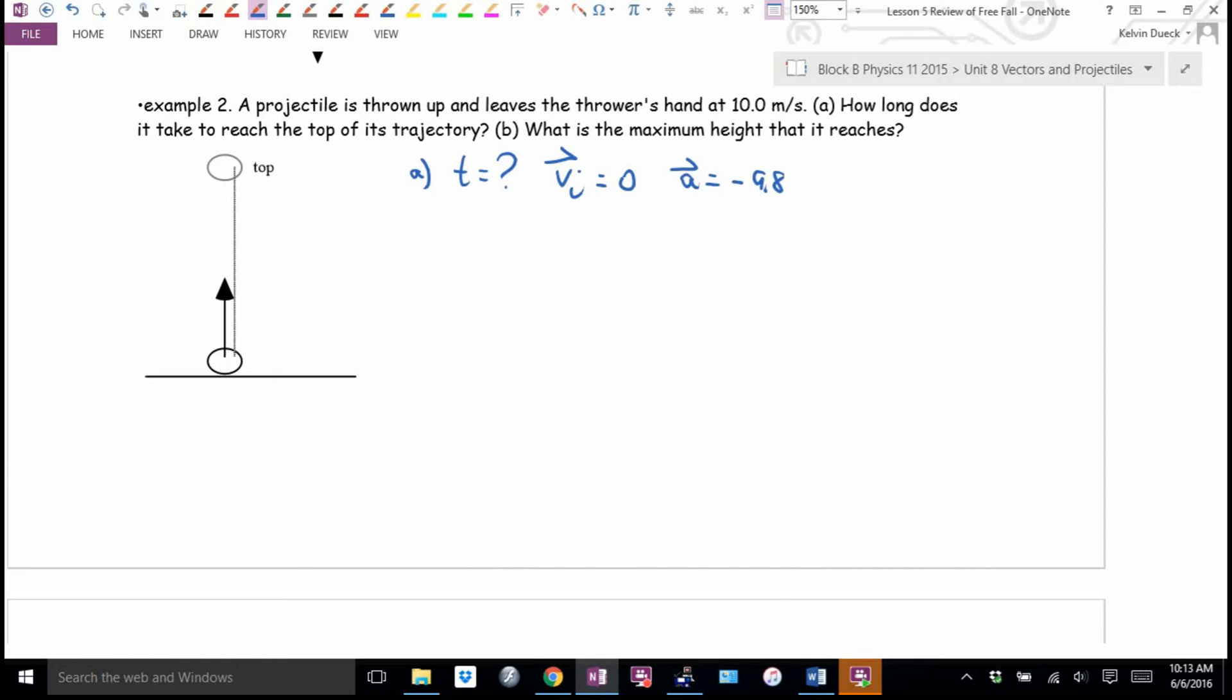What do you know at the top? For a split second. Which equation has a T, a VI, an A, and a VF in it? VF equals VI. Get the T by itself in your head would be cool. T equals VI. And we could even, because VF, sorry, I wrote VI. Did I write VI as zero? VI is 10. Just notice that.